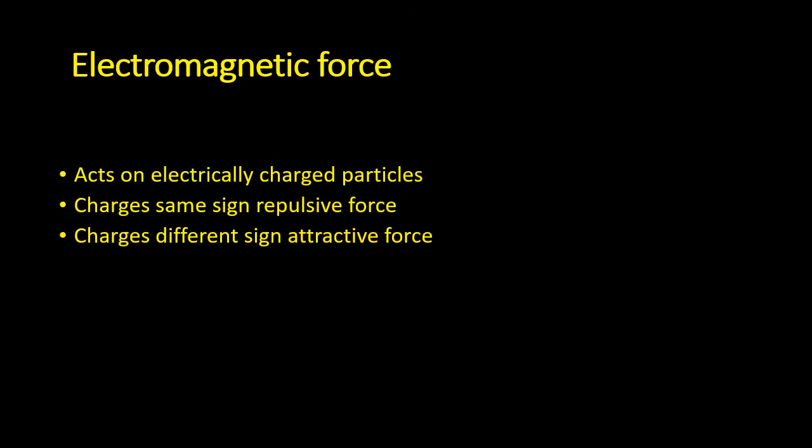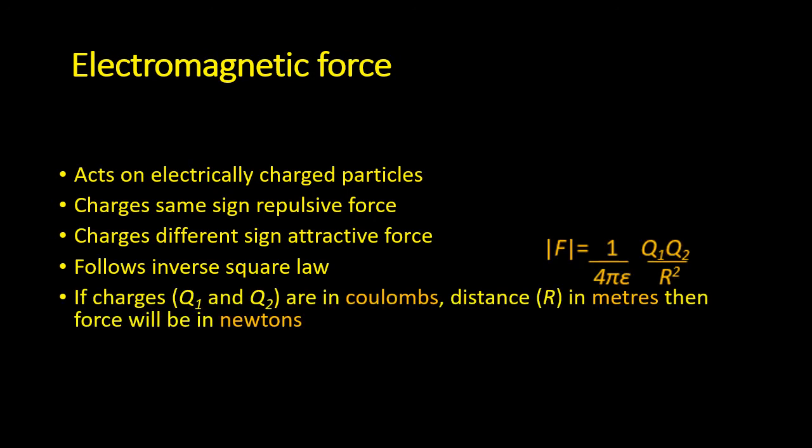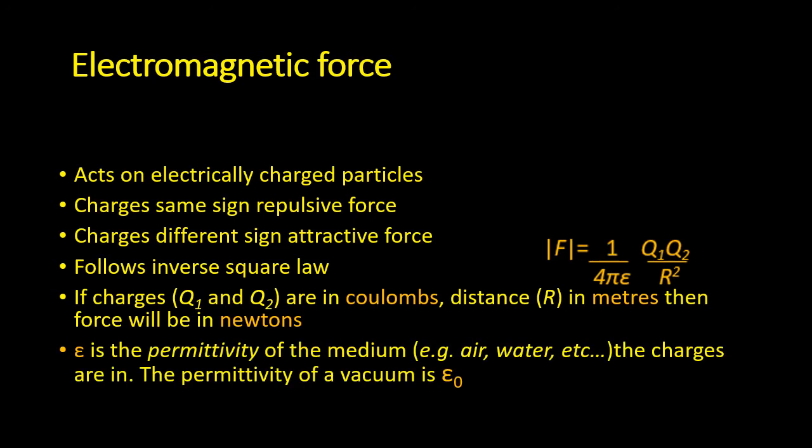The electromagnetic force between two charges follows an inverse square law. If the charges are in coulombs, which is a standard unit of charge, distances in meters, then the force will be in newtons. In this expression, the symbol epsilon is the permittivity, and the permittivity of a vacuum is given the special symbol epsilon 0. This force is also called the electrostatic force, or occasionally the Coulomb force.